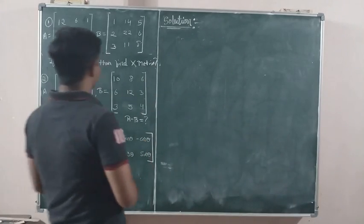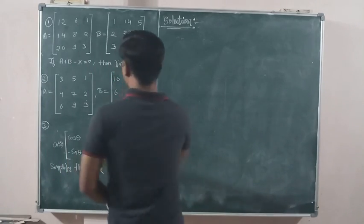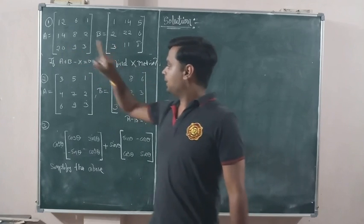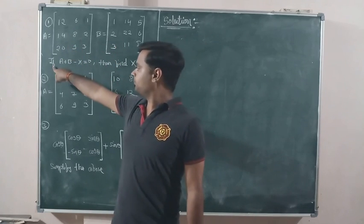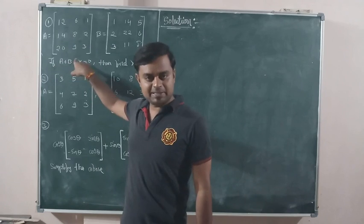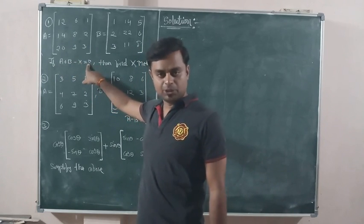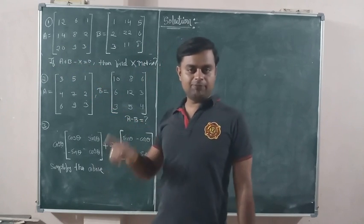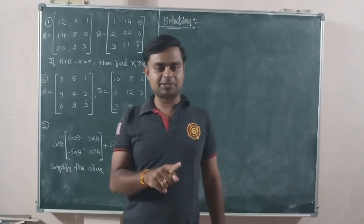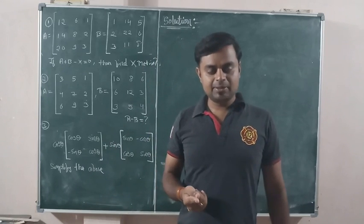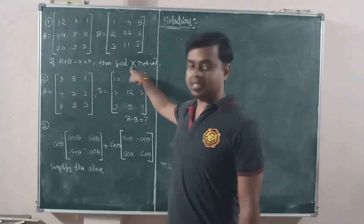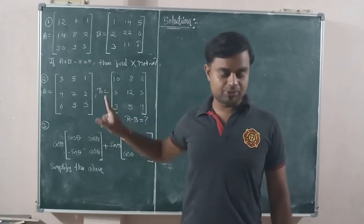Now, what is given in the first problem? There are two matrices, matrix A and matrix B. The problem states: if A plus B minus X is equal to zero, find matrix X.